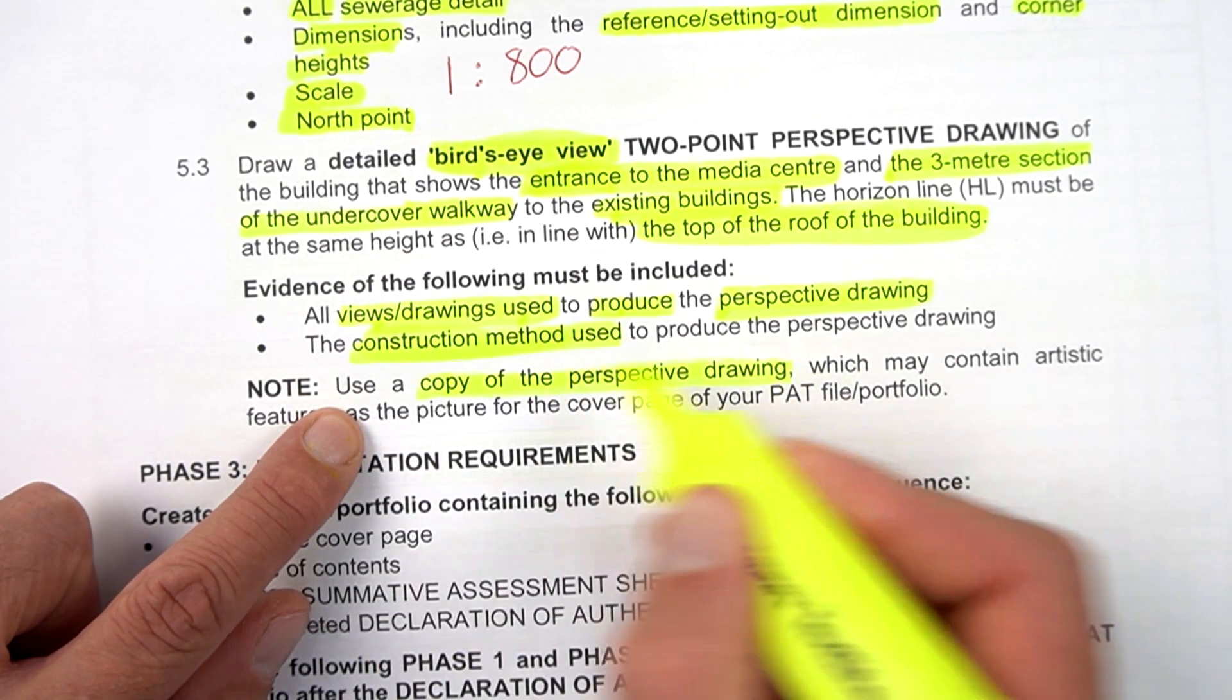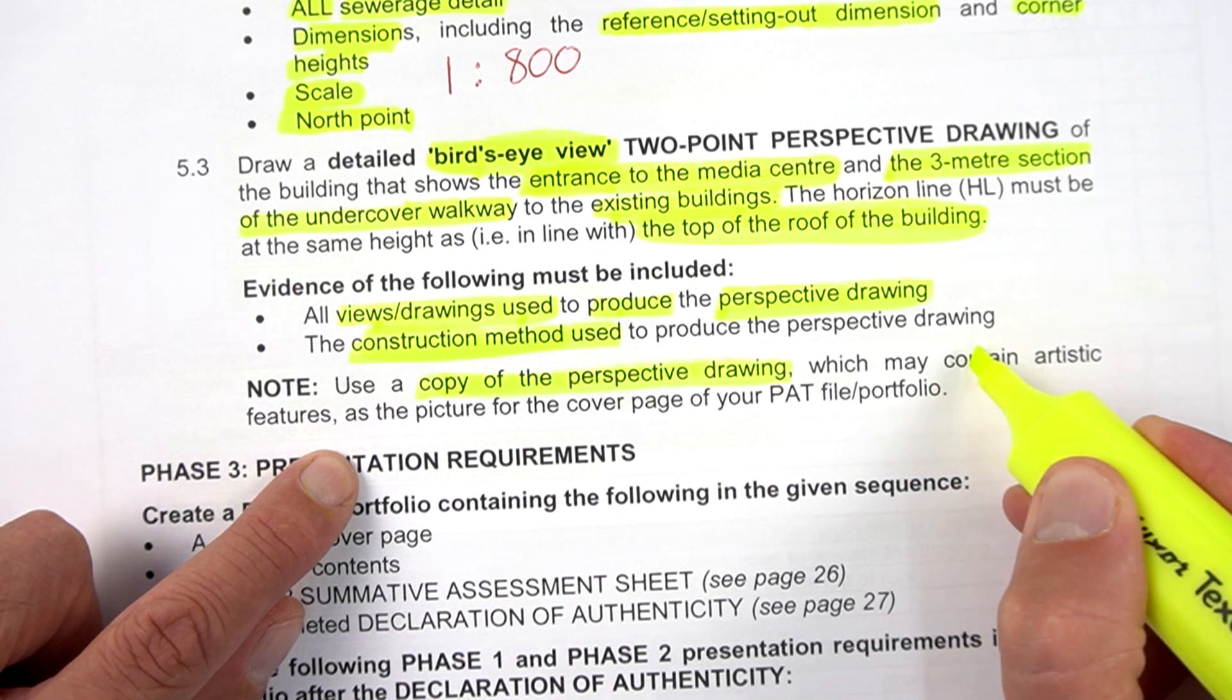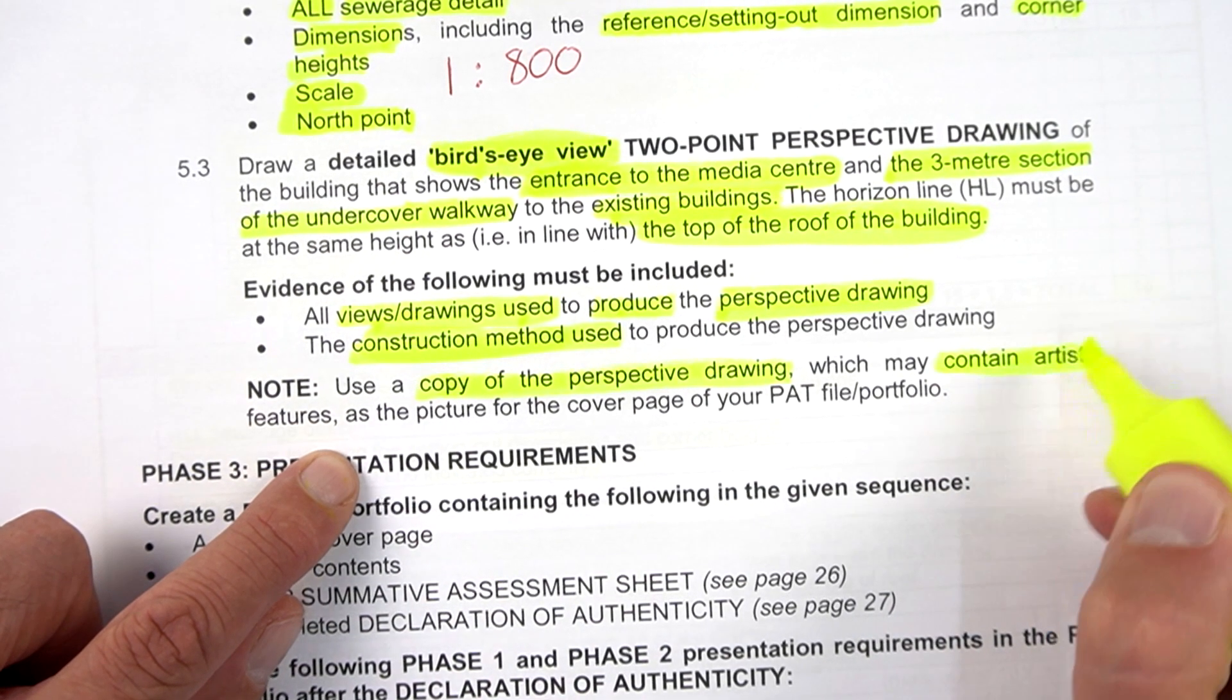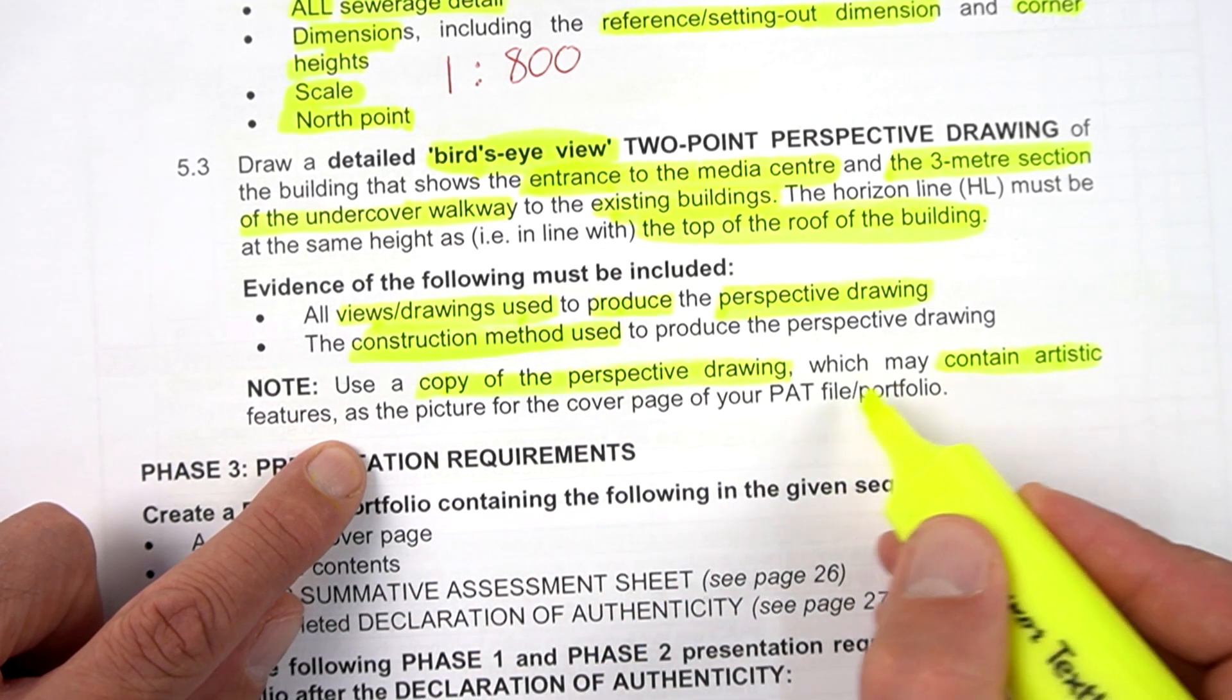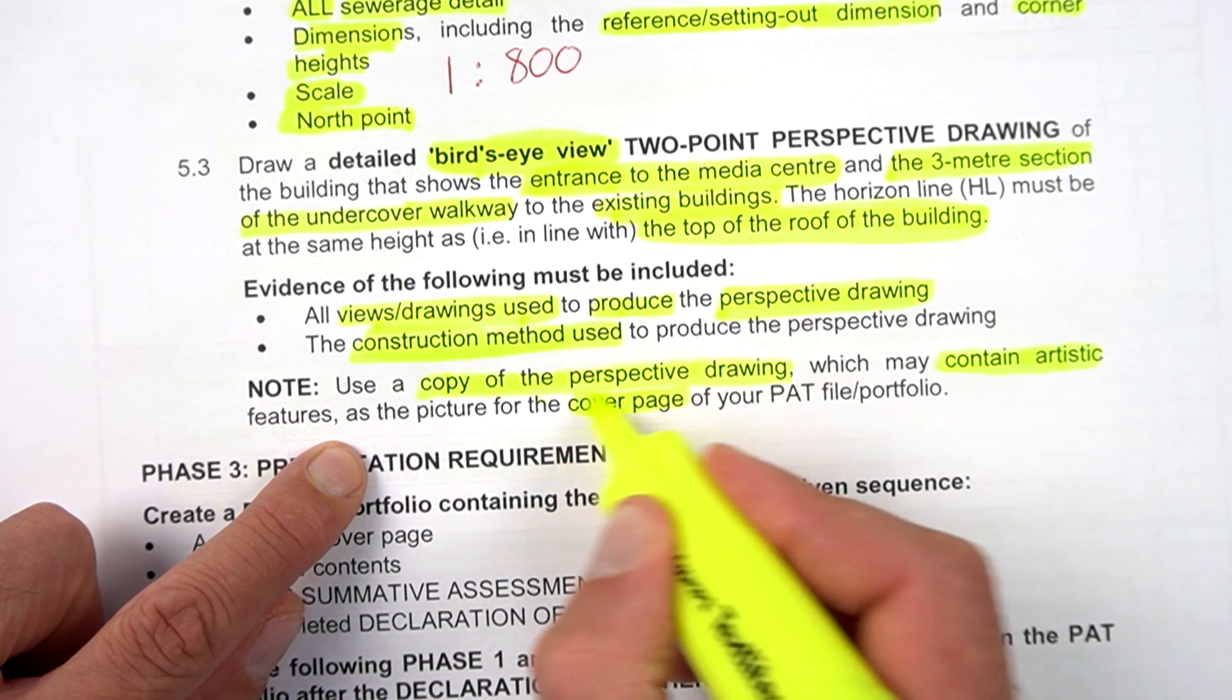Note: you must use a copy of this perspective drawing, which may contain artistic features. In other words, you can color it in a little bit as the picture for the cover of your PAT portfolio. So this drawing is going to go onto your cover page when we are finished with this.